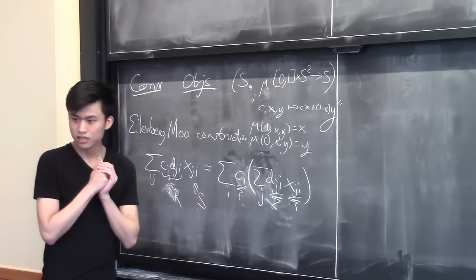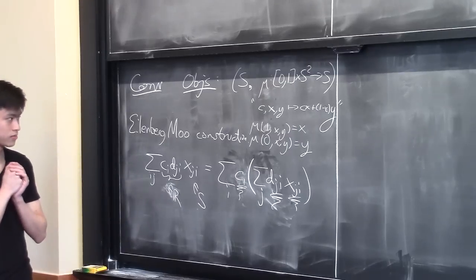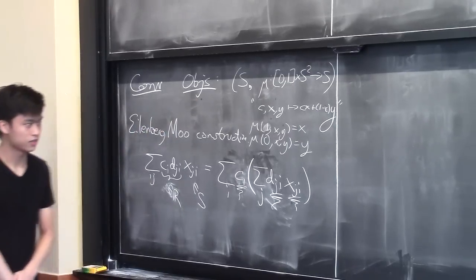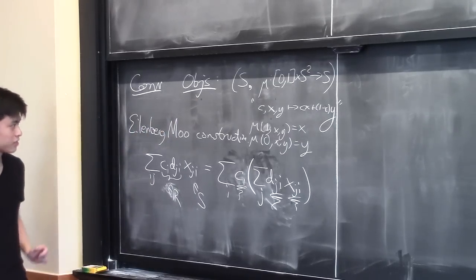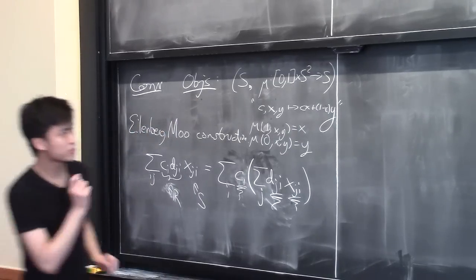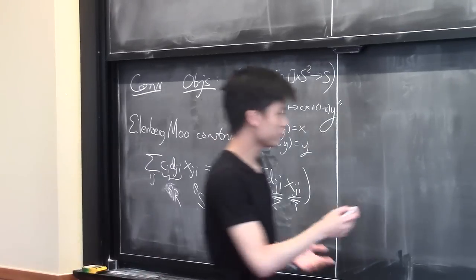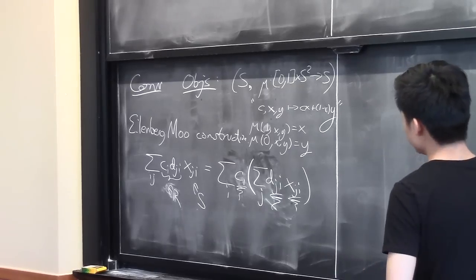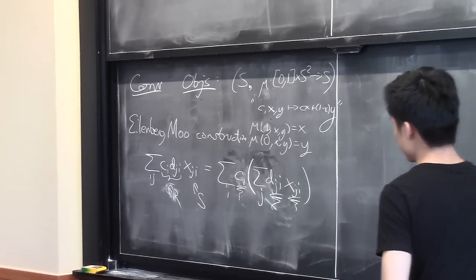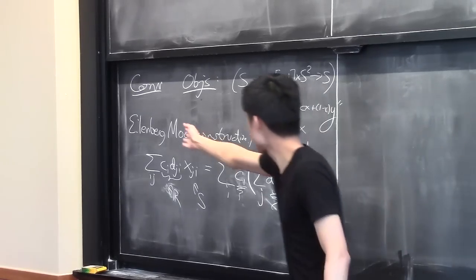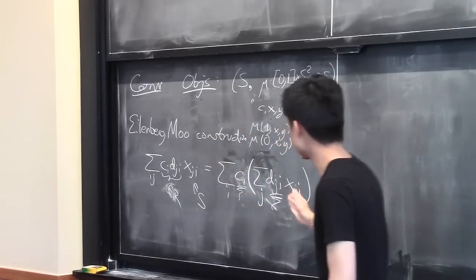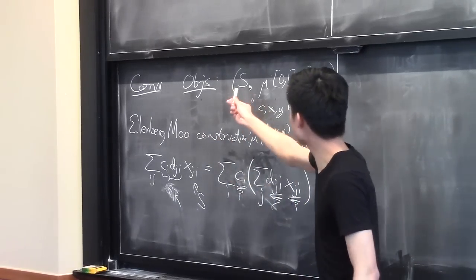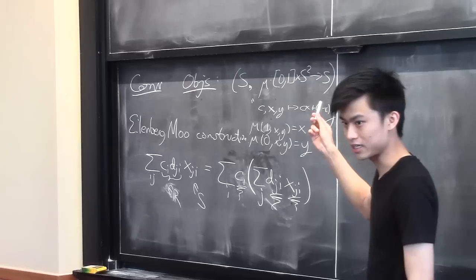Just to make sure — are these the morphisms or the objects? These are the objects. Thank you. But what are the morphisms? The morphisms are just what you'd expect, and they also fall out of this construction. The morphisms are just set maps that preserve the mixing operator.